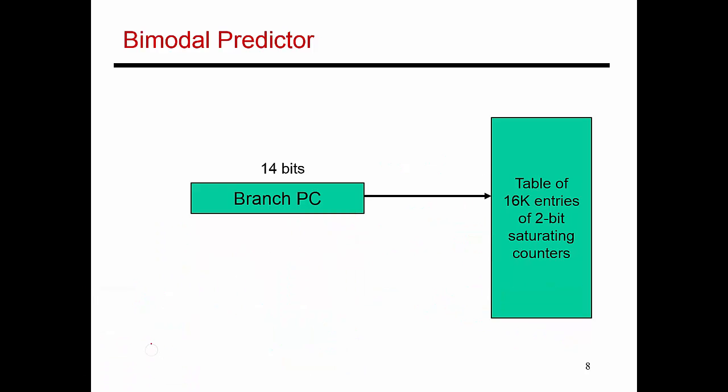I've designed a branch predictor that has 16,000 2-bit saturating counters. I'm extending my previous 4-entry example to now have 16,000 entries. 16,000 is really 16,384, which is 2 to the power 14. When you have 2 to the power 14 counters, you can potentially handle 2 to the power 14 different branches.